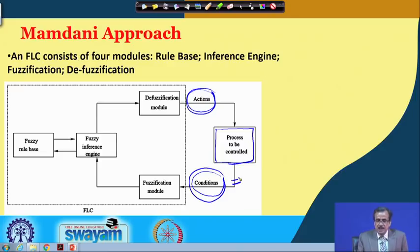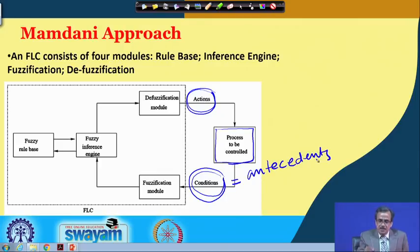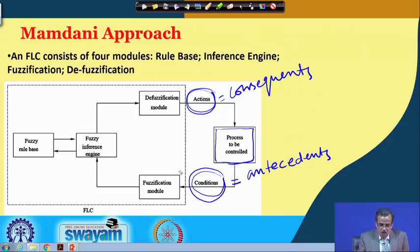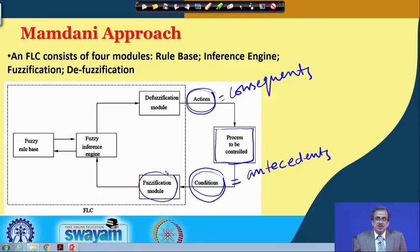The condition variables are also known as antecedents and the action variables are known as consequence. We identify antecedents and consequence first, and once we have the antecedents — the condition variables — we go to the fuzzification module. By fuzzification module, we mean that corresponding to a set of inputs, we try to find out what should be the membership function value.